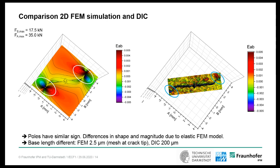When we look at strain fields, we have the 2D FEM simulation and the DIC evaluation plotted with the strain in A and B direction. When we look at the crack tips, we find similar signs for the poles, meaning we are correctly finding the crack tip. We also see differences in shape and magnitudes because of the elastic FEM simulation. In the FEM, we used a very finely meshed crack tip with an element size of 2.5 micrometers to gain accurate stress intensity factors. The base length in the DIC is limited to the resolution — in that case, we have a base length of 200 micrometers.